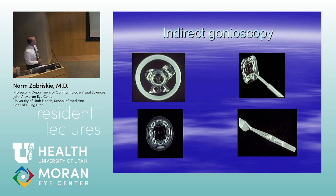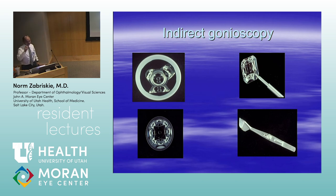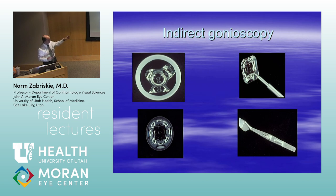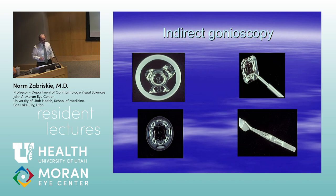Most of what we do is indirect gonioscopy. Examples of indirect gonioscopy lenses include the classic three-mirror lens, a Sussman lens, and the Posner. My favorite by far is the Zeiss four-mirror lens — the optics are fantastic, and the handle works well. The Zeiss costs about $450, and the Posner is less expensive but not quite as good. If you're going to do ophthalmology, you have to invest in a gonioscopy lens. You just can't do glaucoma and can't make the diagnosis without doing gonioscopy.